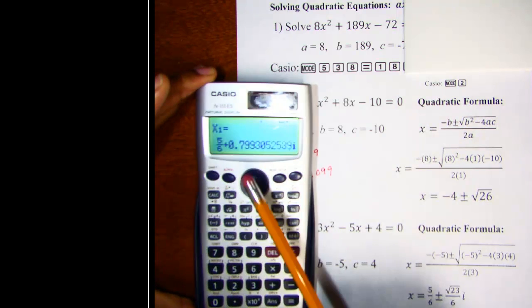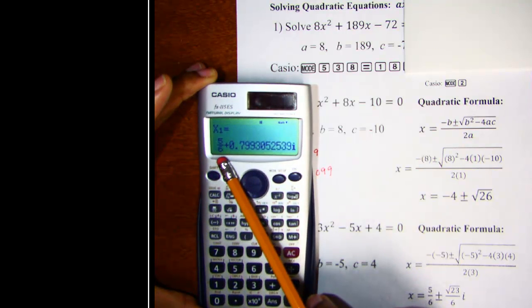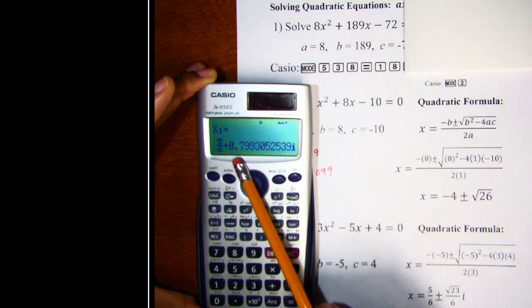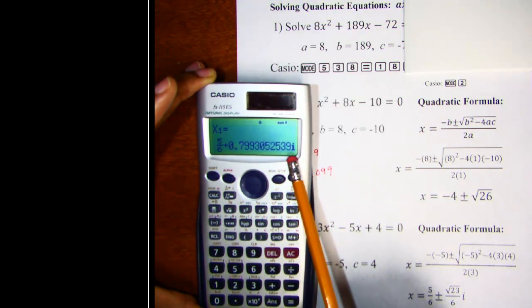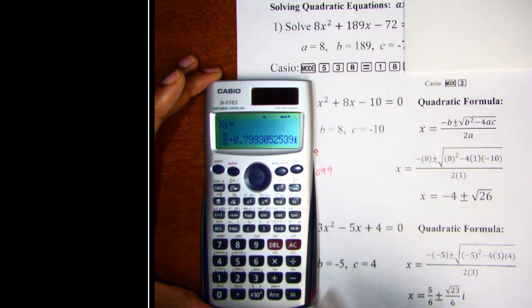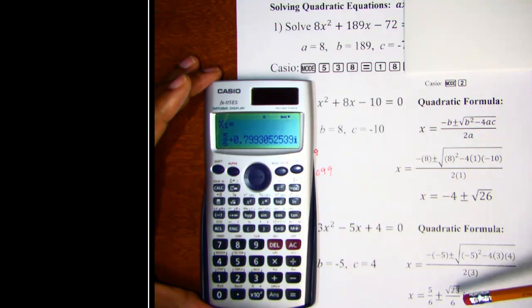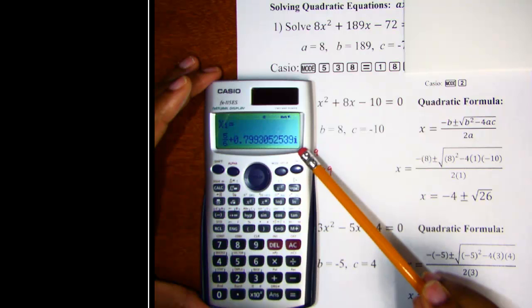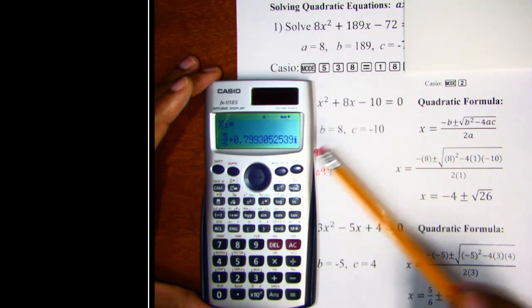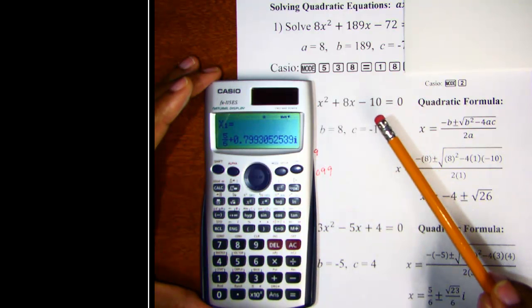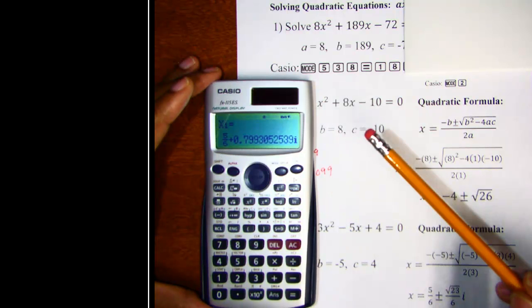Okay. And look what happens. We get five sixths plus and then this irrational coefficient of I. But the Casio does tell us that this is an imaginary solution. So what you'll need to do then is get out of this mode and just use the quadratic formula like we did earlier. Okay. Because it's not very likely that your instructor is going to accept this answer. But at least the Casio is letting you know that this particular quadratic equation has imaginary solutions.